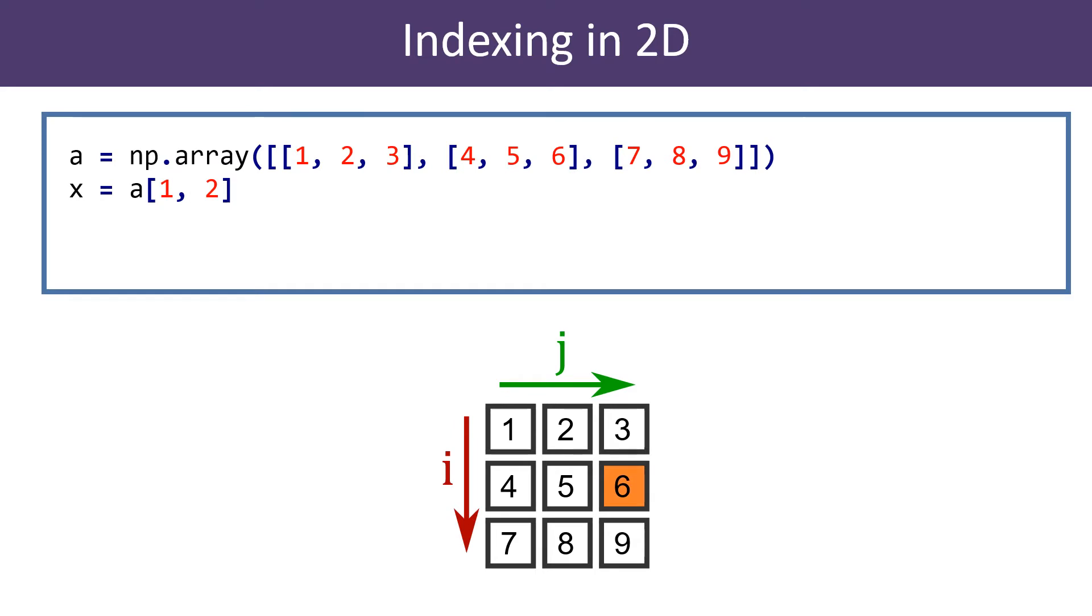Here is how we access element a[1,2]. This selects row 1, the second row, and column 2, the third column, which contains the value of 6.